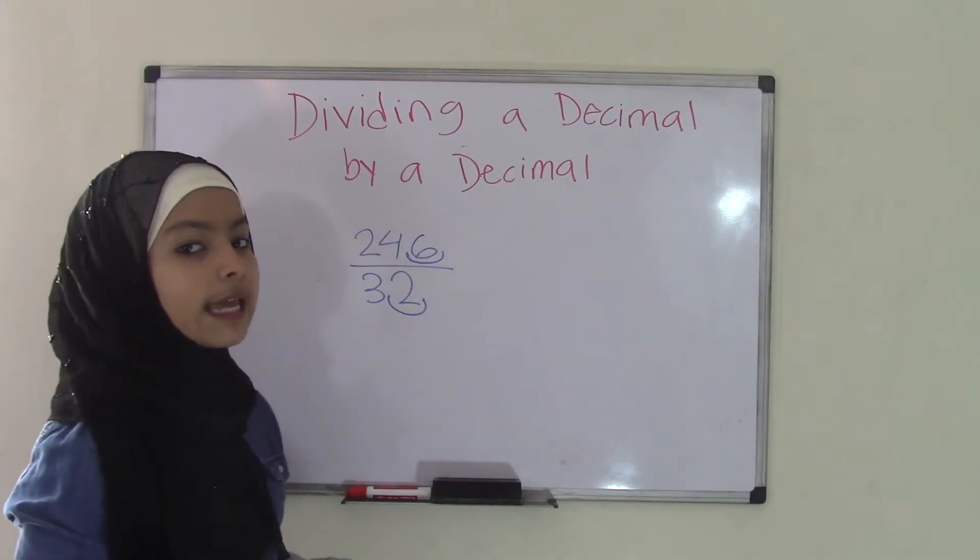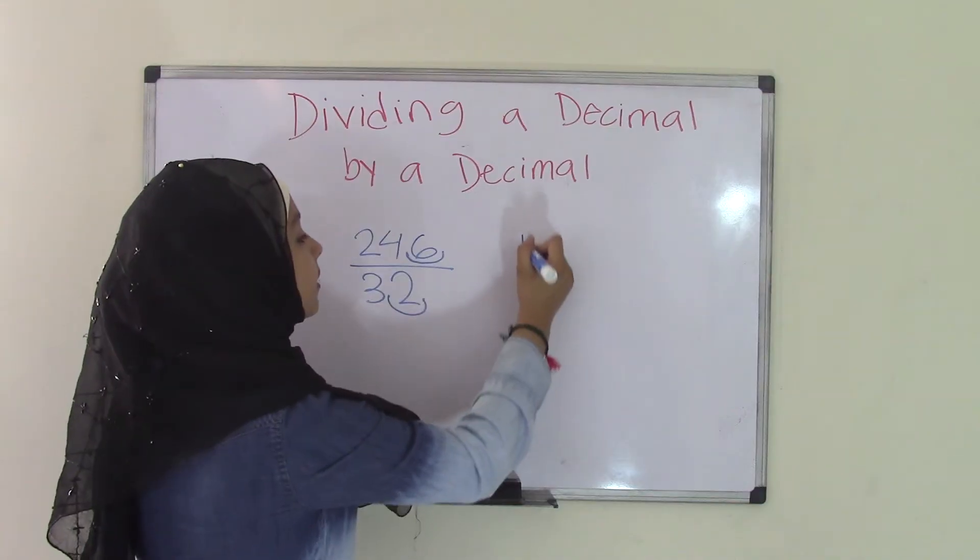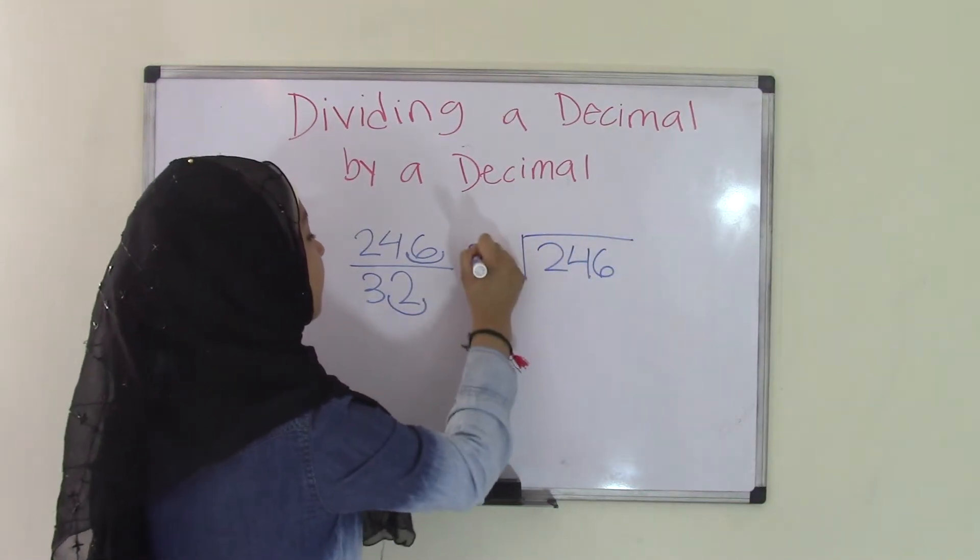Now, once again, we're going to do whole number division. 246 divided by 32. So you write this over here, 246 divided by 32.